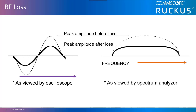Attenuation can take the form of reflection, refraction, diffraction, scattering, or absorption. Interference is the weakening of an RF signal as it exists in a noisy space. Interference can also be introduced by design through the use of an attenuator.